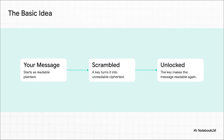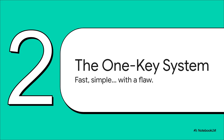The basic idea is pretty straightforward. You start with your message, then a special digital key scrambles it into that ciphertext. And on the other end, that exact same key is used to unlock the message, turning it right back into its original, readable form. But that begs the question: what exactly is this key? Well, the first and simplest approach is what we call the one-key system. It is incredibly fast and efficient, but it comes with one major glaring problem.